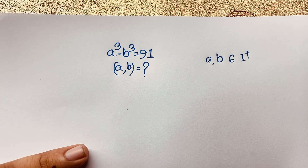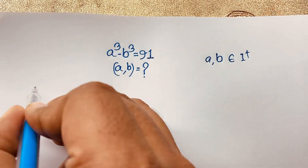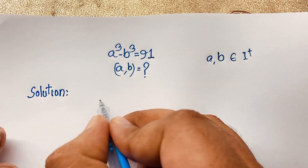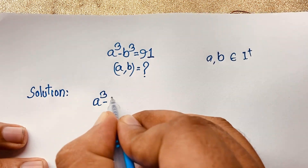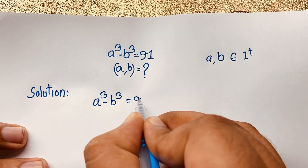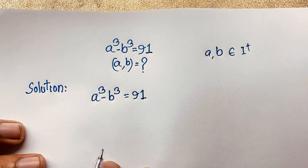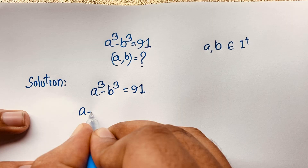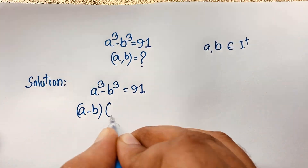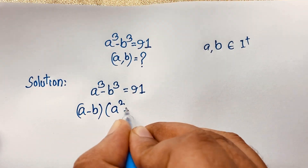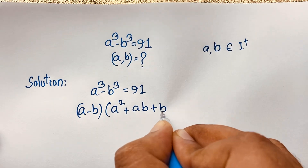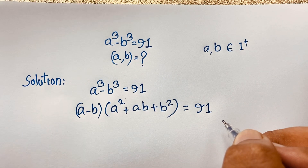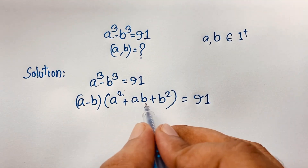Our question is a³ minus b³ equals 91. We apply the difference of cubes formula: a³ minus b³ equals (a minus b) times (a² plus ab plus b²), which equals 91.